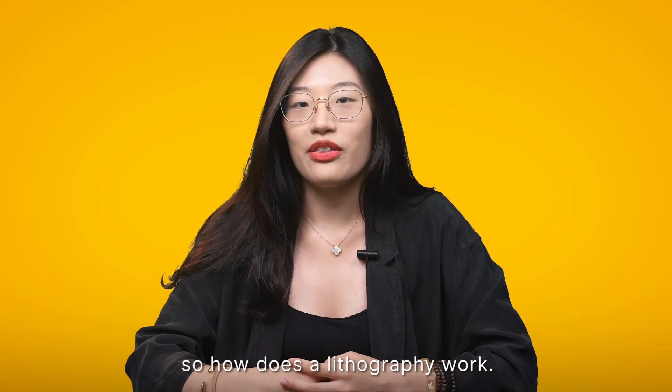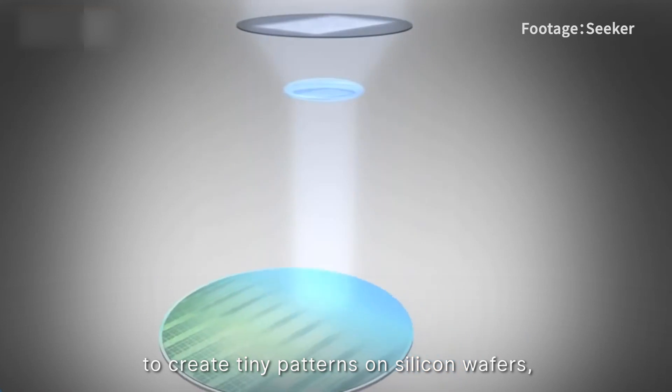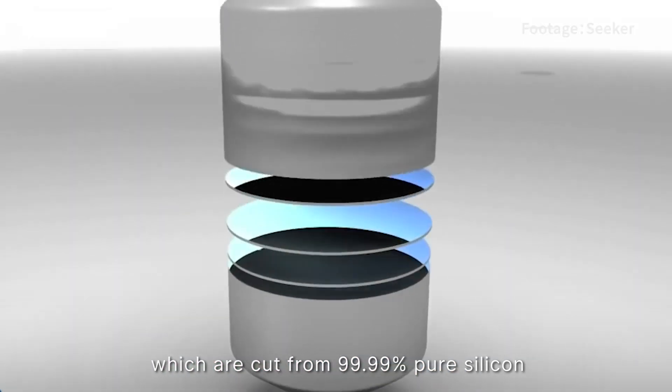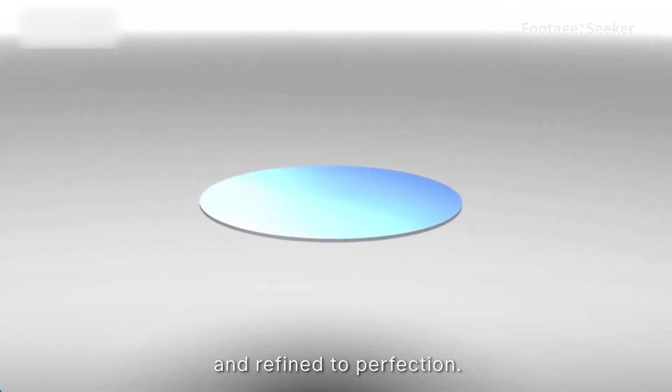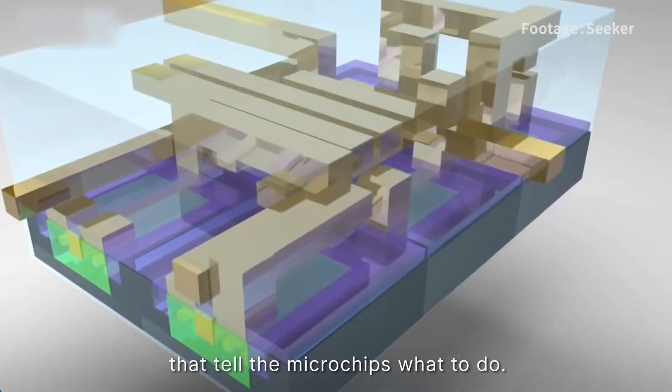So how does lithography work? Lithography machines use lights to create tiny patterns on silicon wafers, which are cut from 99.99% pure silicon and refined to perfection. The patterns are like instructions that tell the microchips what to do.